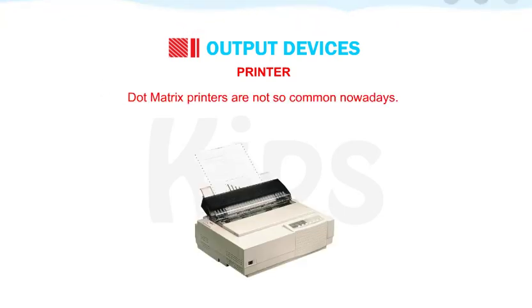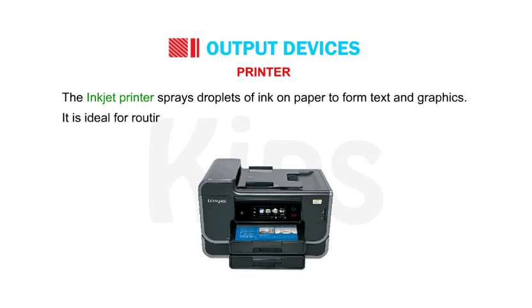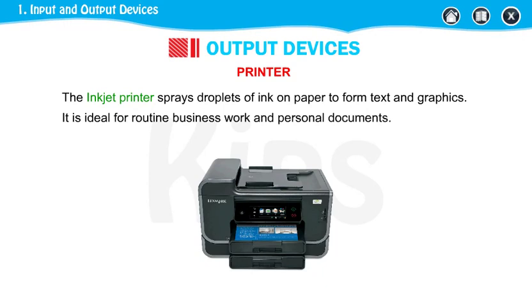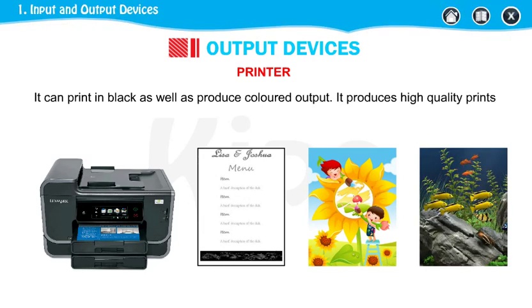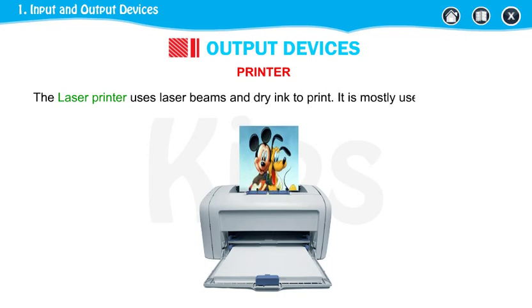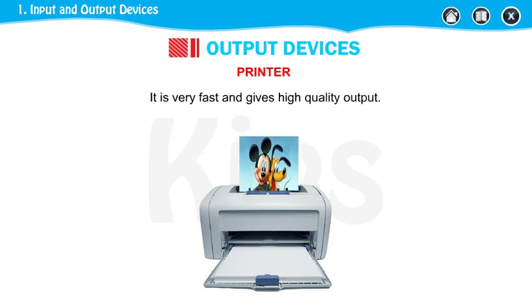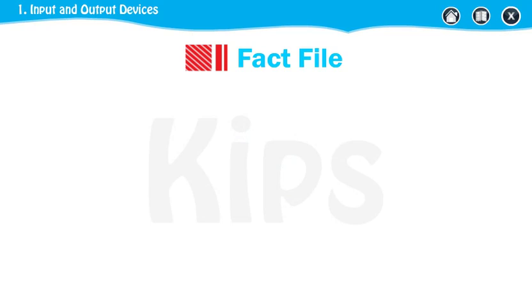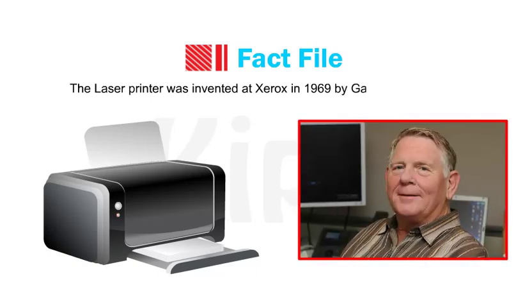The inkjet printer sprays droplets of ink on paper to form text and graphics. It is ideal for routine business work and personal documents. It can print in black as well as produce colored output. It produces high-quality prints when used with special paper. The laser printer uses laser beams and dry ink to print. It is mostly used in publishing houses. It is very fast and gives high-quality output. The laser printer was invented at Xerox in 1969 by Gary Starkweather.